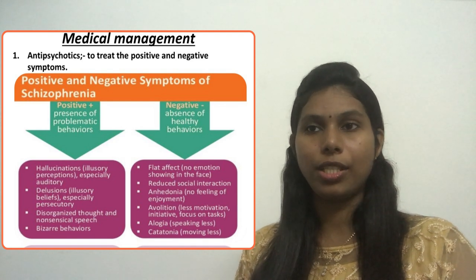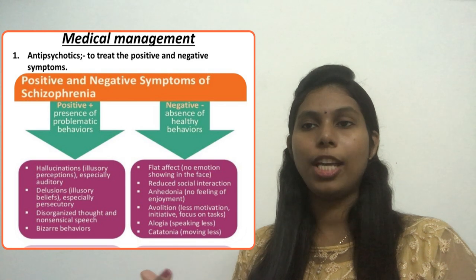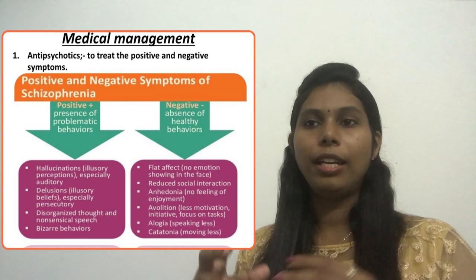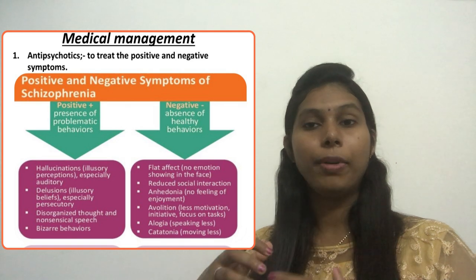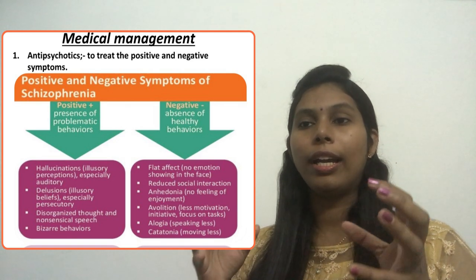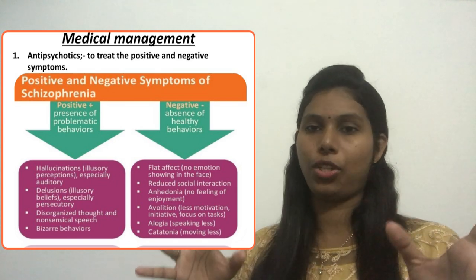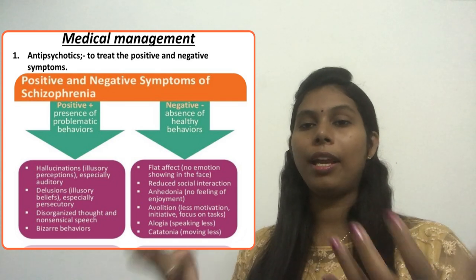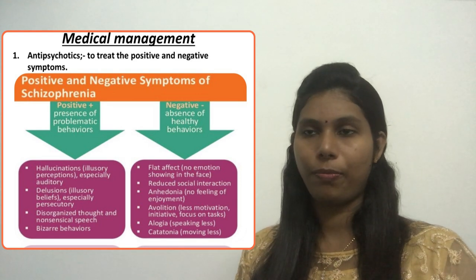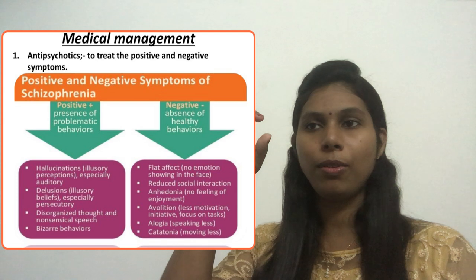Examples of positive symptoms of schizophrenia: hallucinations — especially auditory hallucinations and illusory perceptions; delusions — like persecutory delusions; disorganized thought and nonsensical speech; and bizarre behavior — very strange or unusual behaviors.